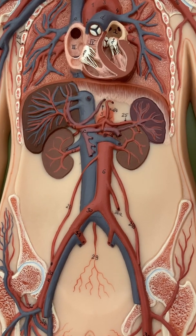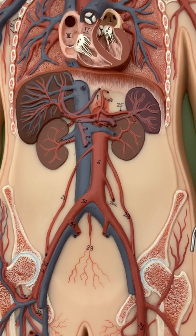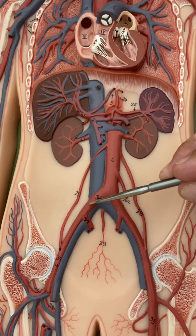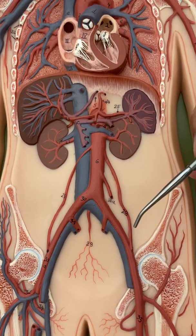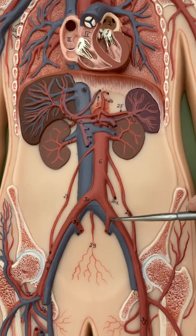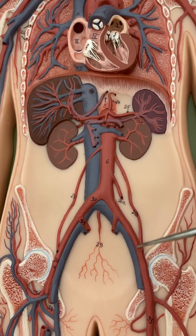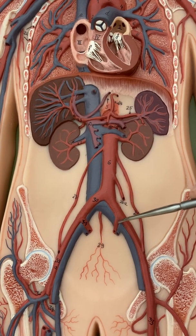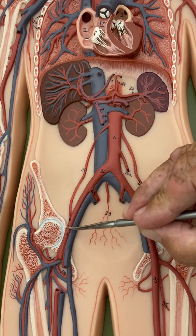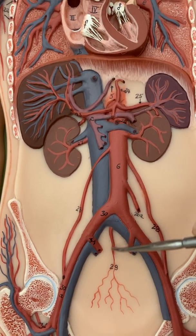When the abdominal aorta ends it splits into two called the common iliac — we're around the hip now, hence 'iliac.' Remember: when the prefix is 'common,' it's going to split into internal and external. Sure enough, the internal iliac goes deep into the pelvic region, and the external iliac exits the hip. There's also the sacral artery coming off here.